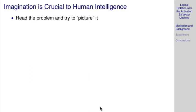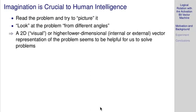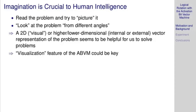Why imagination as a focus area? It seems crucial to human intelligence. We read the problem and try to picture it, we look at the problem from different angles. There's this visual metaphor in many aspects related to problem solving. Such a higher or lower dimensional vector representation seems helpful for solving problems, and the visualization feature of the activation bit vector machine could be key.